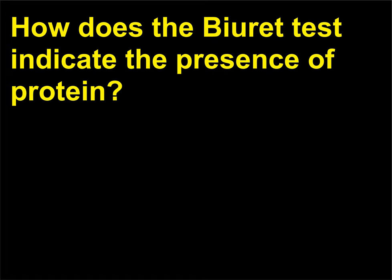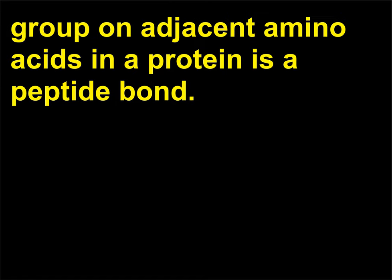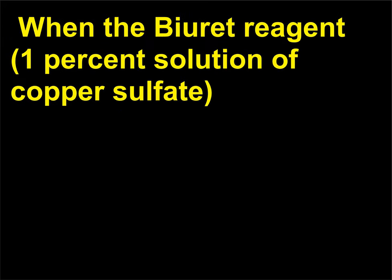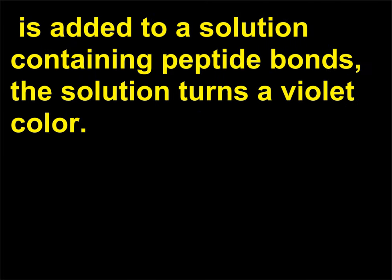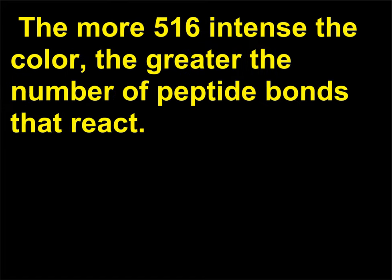How does the biuret test indicate the presence of protein? The bond between the amino group and the carboxyl acid group on adjacent amino acids in a protein is a peptide bond. When the biuret reagent, a 1% solution of copper sulfate, is added to a solution containing peptide bonds, the solution turns a violet color. The violet color is a positive test for the presence of protein. The more intense the color, the greater the number of peptide bonds that react.